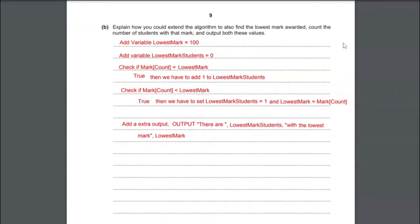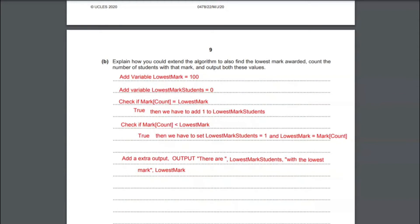We must also add another variable, lowest mark students, and set it to 0 since we have to count the students with the lowest mark. Then we check if the inputted mark equals lowest mark — if true, we add 1 to lowest mark students. We also need another conditional statement: if mark count is less than lowest mark, then the current lowest mark variable is no longer the lowest. If true, assign lowest mark the inputted mark value, then set lowest mark students to 1. Finally, add an extra output statement to output lowest mark students and lowest mark. If you explain this clearly, you can get 6 marks.